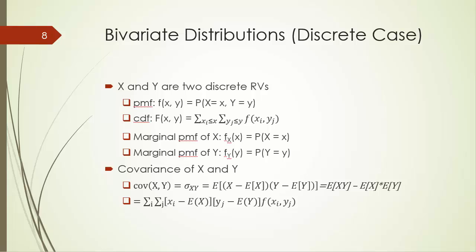Now let's consider bivariate distributions. Due to its complexity, we only talk about the discrete case. Suppose X and Y are two discrete random variables. We can define the joint probability mass function and joint probability distribution function of X and Y. The way they are defined is essentially the same as how we define PMF and CDF for one discrete random variable. Based on the joint PMF, we can define marginal PMF for X and Y respectively, just like how we dealt with marginal probabilities in the joint probability table.